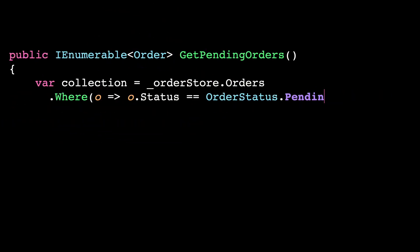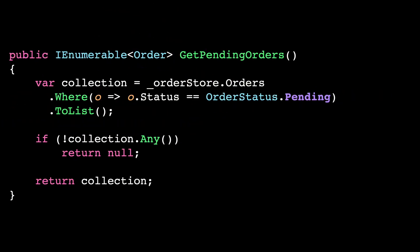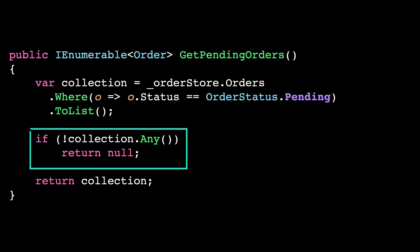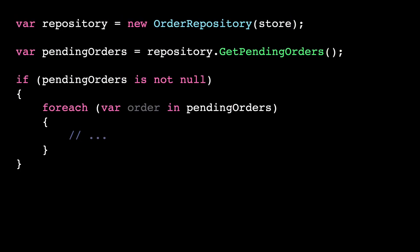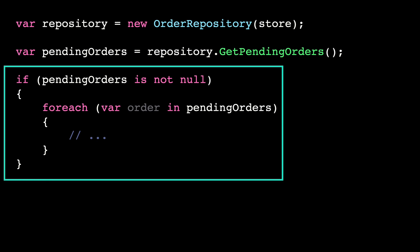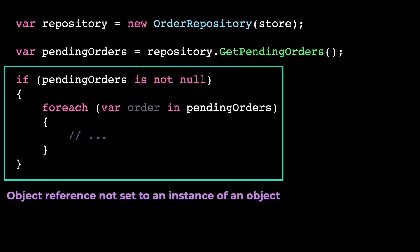The typical scenario where we'll do that is when you are accessing a database trying to retrieve some data and you can't find what you are looking for, so you return a null. The problem is that now the caller needs to handle that null, creating a kind of implicit contract between the provider and the caller — one that scales as the number of consumers of that class grows.